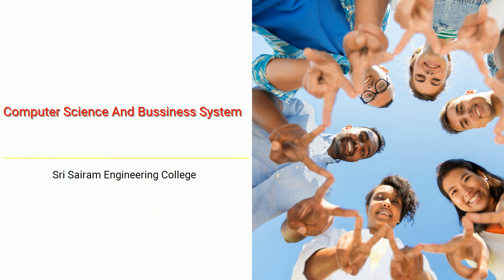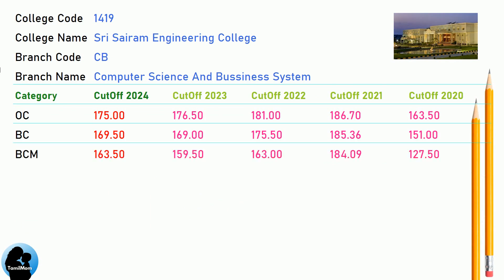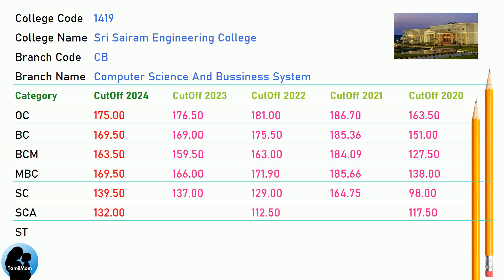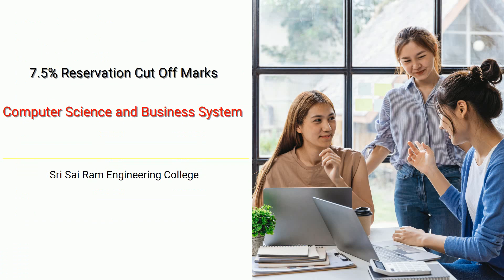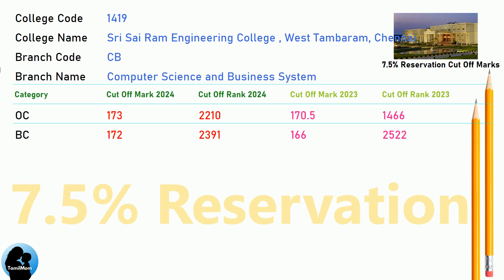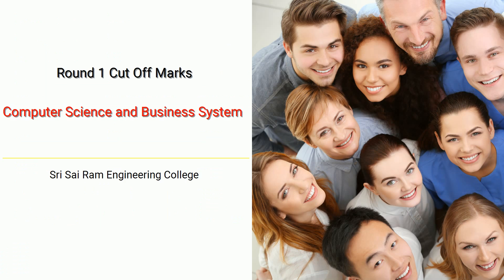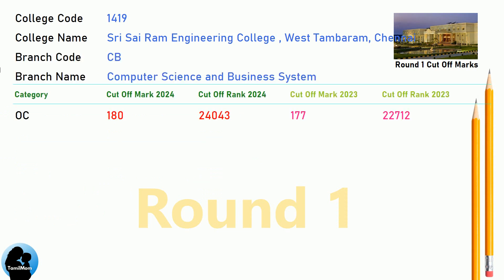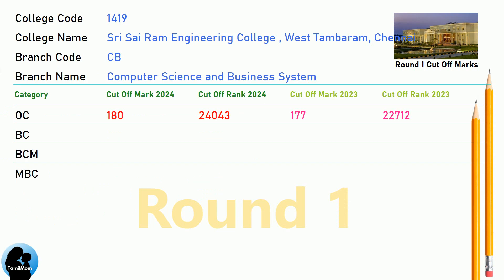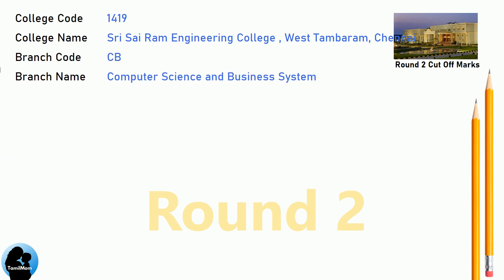DNA Cut-off for Shri Sai Ram Engineering College in Computer Science and Business Systems. DNA 7.5 Reservation Cut-off for Shri Sai Ram Engineering College in Computer Science and Business Systems. DNA Round 1 Cut-off for Shri Sai Ram Engineering College in Computer Science and Business Systems. DNA Round 2 Cut-off for Shri Sai Ram Engineering College in Computer Science and Business Systems.